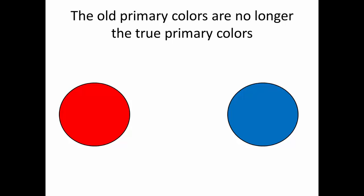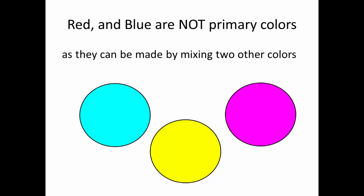But the old primary colors, red and blue, are no longer the true primary colors. Red and blue are not primary colors, as they can be made by mixing two other colors.